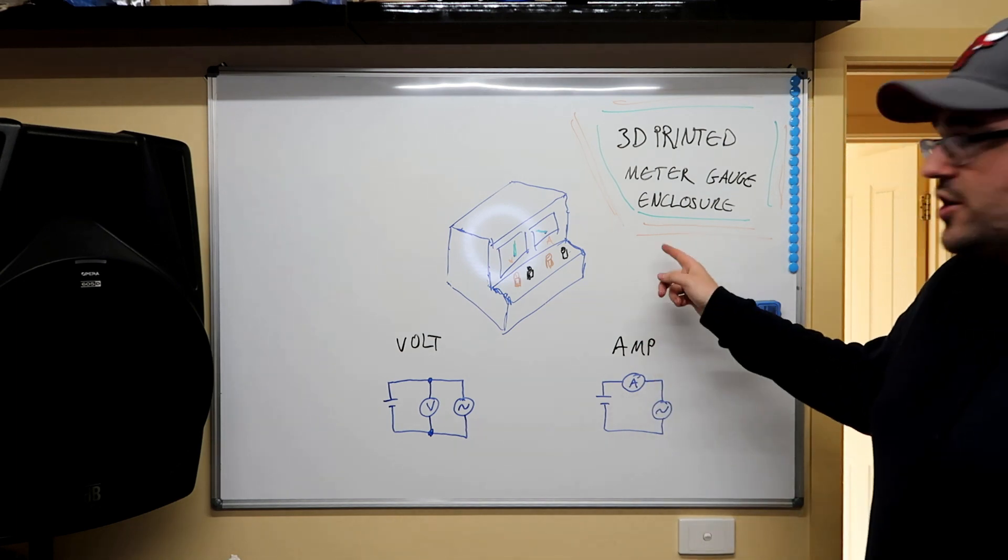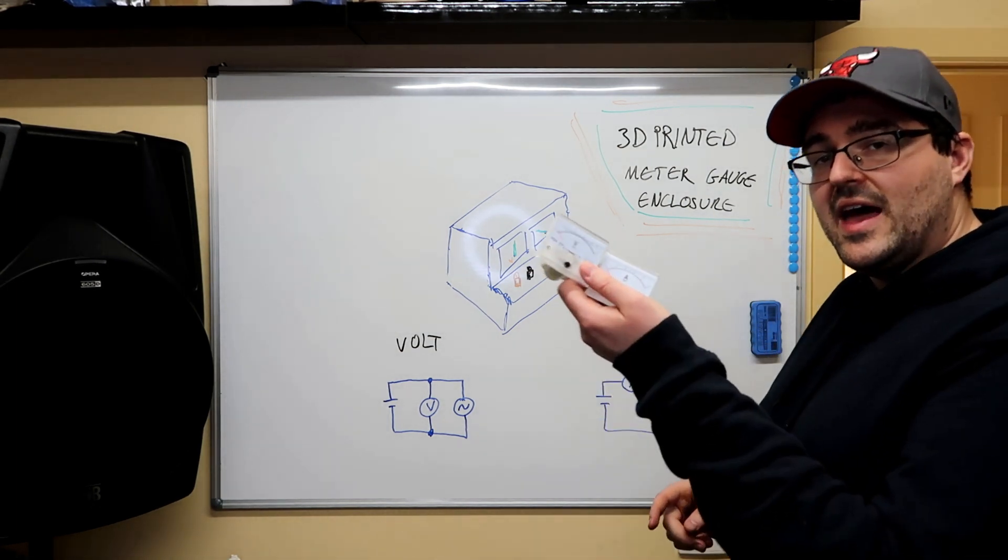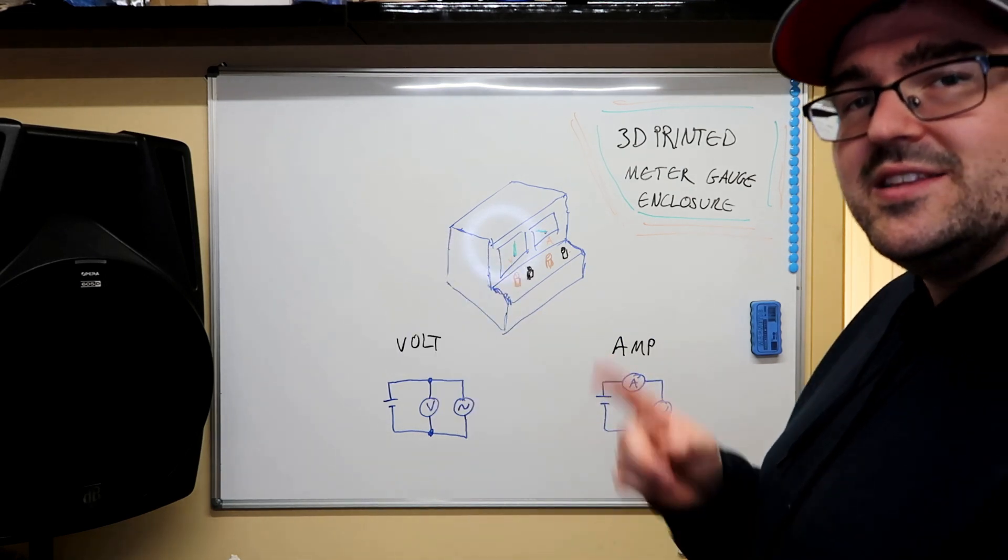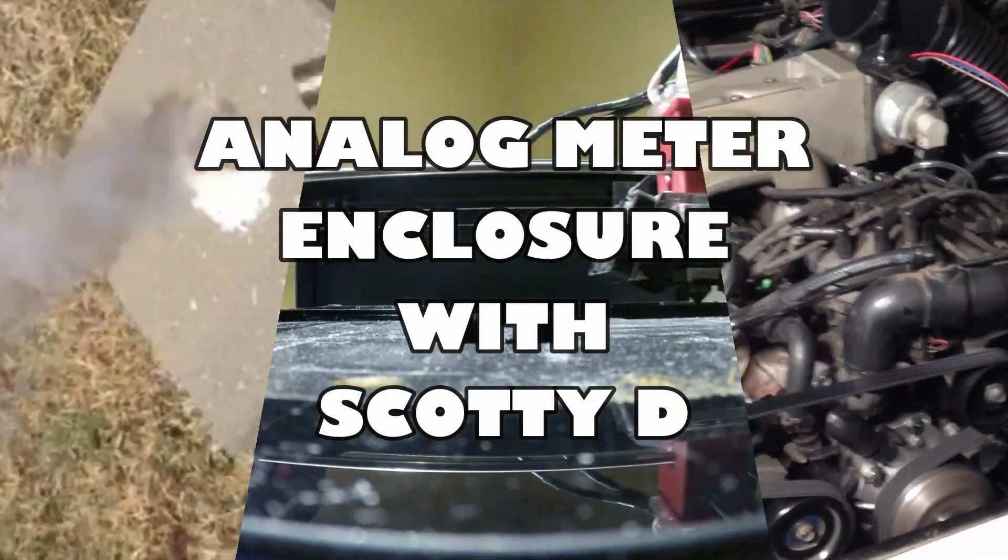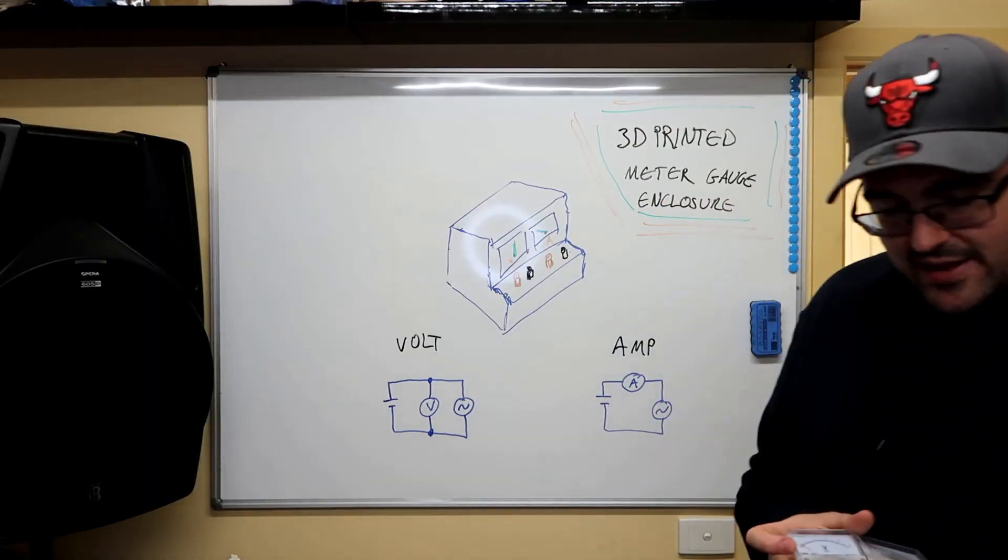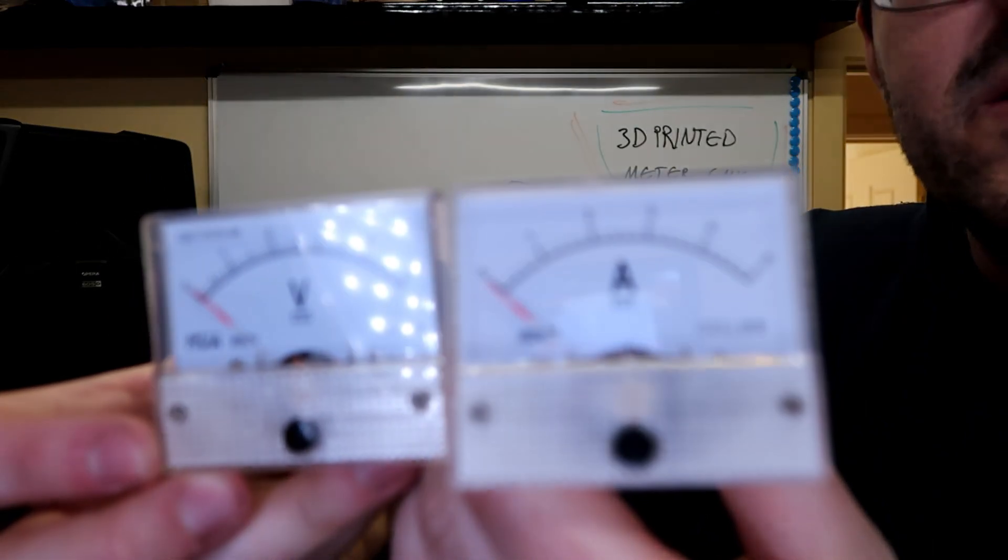Hey what's up guys, I'm gonna show you my 3D printed meter gauge enclosure for these analog meters. So let's go. All right, so as you can see here I've got these two analog meters, there's a volt meter and an amp meter.